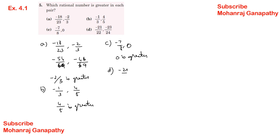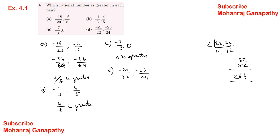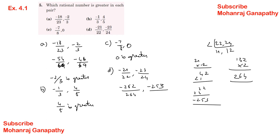For D: minus 21 by 22 vs minus 23 by 24. LCM of 22 and 24 is 264. Converting: minus 21 by 22 gives minus 252 by 264, and minus 23 by 24 gives minus 253 by 264. Since minus 252 is greater than minus 253, minus 21 by 22 is greater.